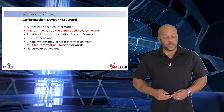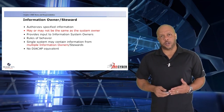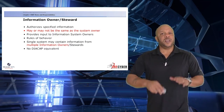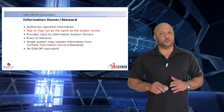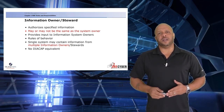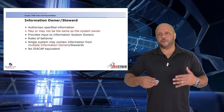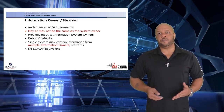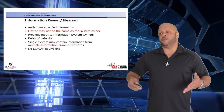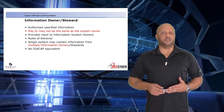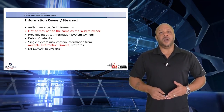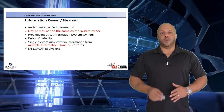Next, we have the information owner or steward. This is the individual that authorized the specific information. They may or may not be the system owner — it is okay to have two separate roles; they are not mutually exclusive. The information steward is there to provide input to the information system owner and to advise on the rules of behavior for the specific information system. A single system may, in fact, contain multiple information owners.